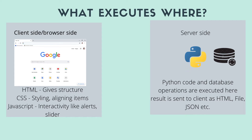Another client-side technology is JavaScript. JavaScript is a programming language that runs in the browser — it is a client-side programming language. For example, it is used for pop-up boxes and slider animations. JavaScript is executed on the client side, whereas Python is executed on the server side.